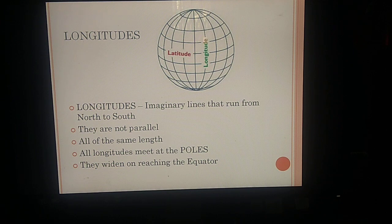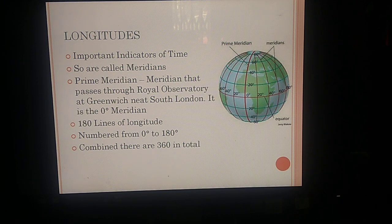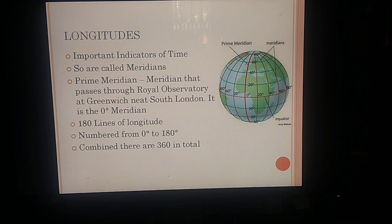The poles are the extreme points of the earth — the extreme point in the north is the north pole and in the south is the south pole. The longitudes widen when they reach the equator. Longitudes are important indicators of time and are called meridians. The prime meridian passes through the Royal Observatory at Greenwich, near south London, and is the zero degree meridian. There are 180 lines of longitude numbered from zero degree to 180 degrees.